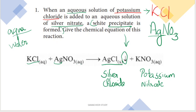In the white precipitate form, this is the chemical equation. First, potassium chloride — how do we represent it? KCl. K is potassium, Cl is chlorine. So KCl is potassium chloride, plus silver nitrate.